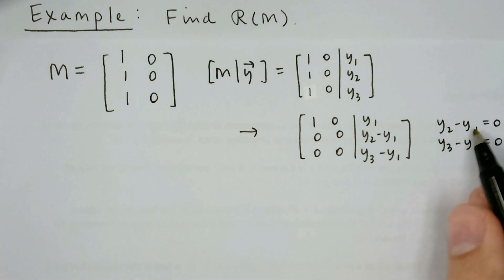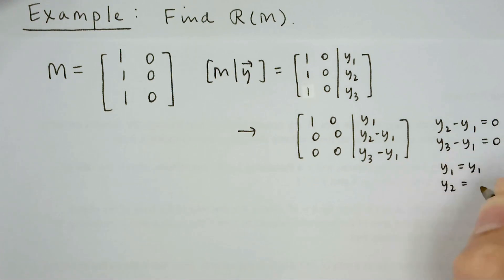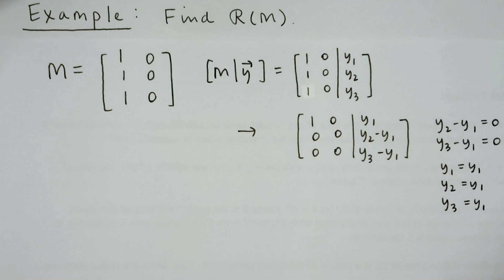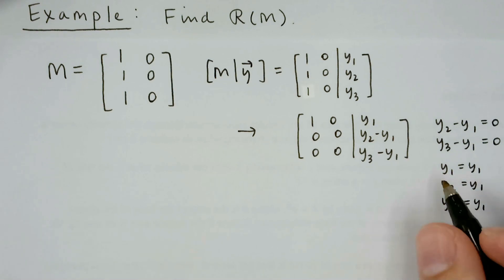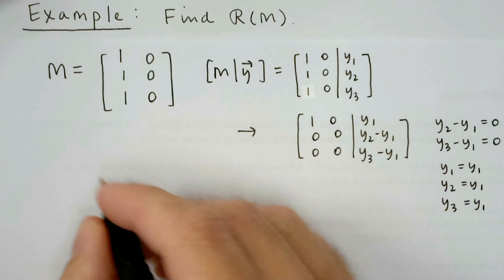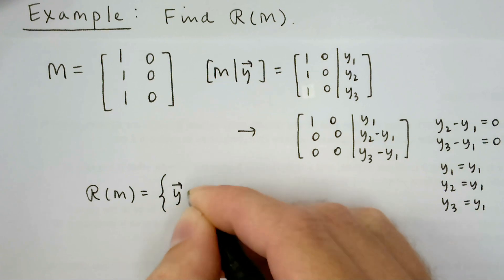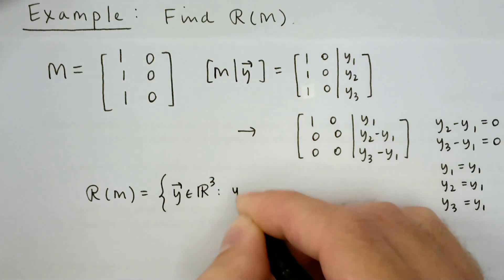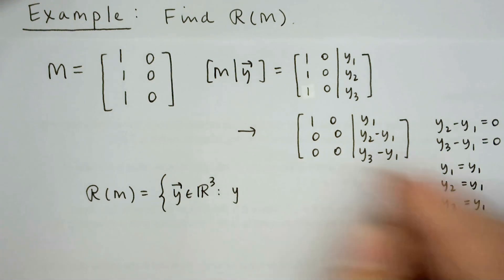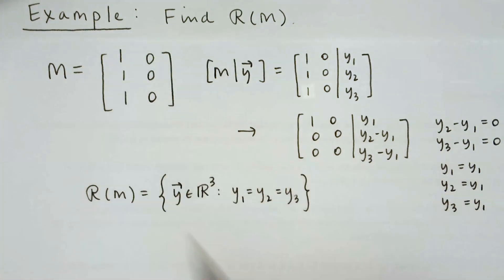So y₂ = y₁ and y₃ = y₁ — y₁ is the independent variable and I actually only have one degree of freedom. The range of M is the set of all vectors Y in R³ such that y₁ = y₂ = y₃. That's exactly what we expected from thinking about all combinations of the columns.